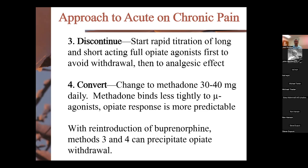A third option is to discontinue buprenorphine, start a rapid titration of long and short-acting opioid agonists to avoid withdrawal, and pull off the buprenorphine. This requires acting proactively upstream — getting them off buprenorphine before surgery, keeping them on a pure mu agonist through surgery, then weaning off and reintroducing buprenorphine afterward. More complicated with more risk for error. A fourth option is to convert to methadone, roughly 30 to 40 milligrams daily depending on the buprenorphine dose, as methadone binds less tightly to mu receptors making the opioid response more predictable. Option one — keep things the same and titrate short-actings — is generally the simplest and best.